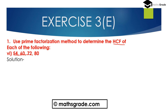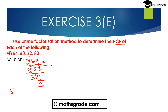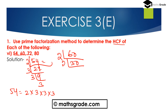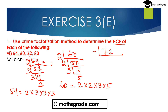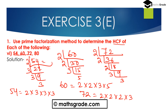First find out the prime factorization. 54 = 2 × 3 × 3 × 3. Prime factorization of 60: 60 = 2 × 2 × 3 × 5. Prime factorization of 72: 72 = 2 × 2 × 2 × 3 × 3.